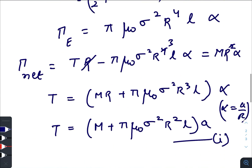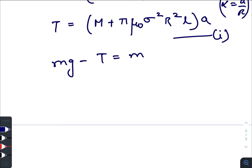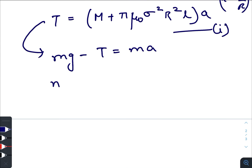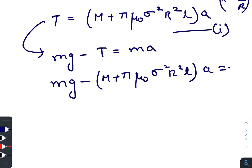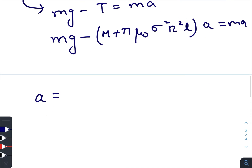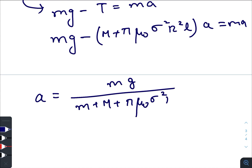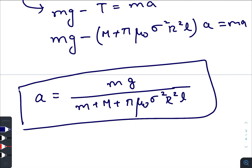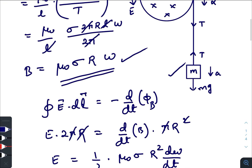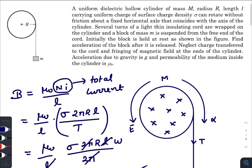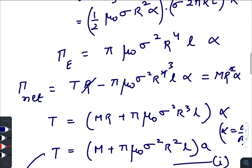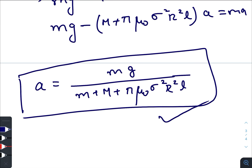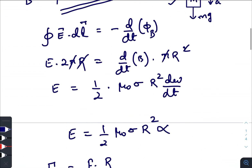The equation for the hanging block is mg − T = ma. Substituting the expression for T: mg − (M + πμ₀σ²R²L)·a = ma. Solving for acceleration: a = mg / (m + M + πμ₀σ²R²L). This is the final expression for the acceleration of the block of mass m. I hope you found this video helpful and informative — if you are new to this channel please subscribe, and thanks for all your love and support!